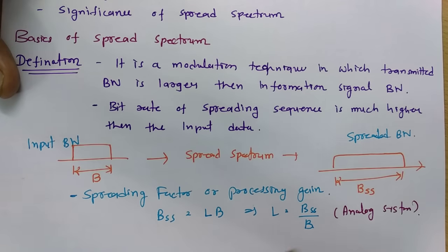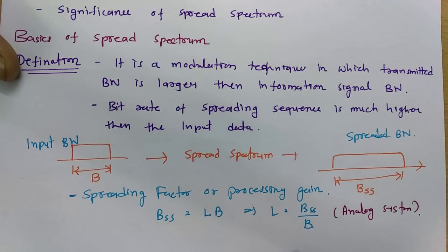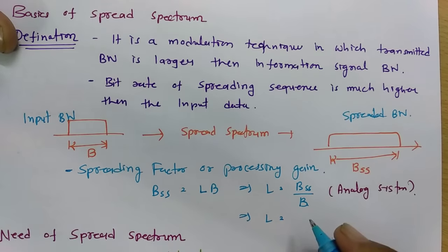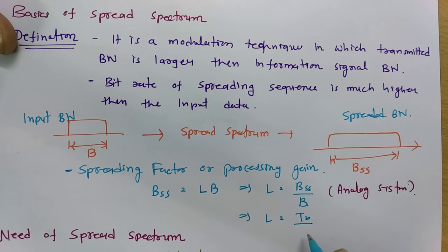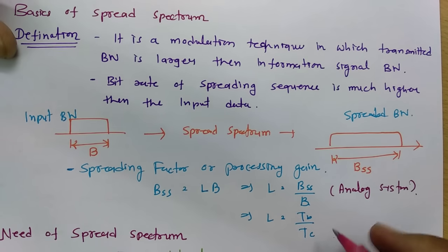For a digital system, the processing gain L is calculated as the bit time period divided by the chip time period. So for digital systems, L equals T_b divided by T_c.